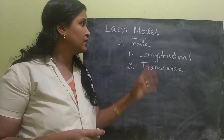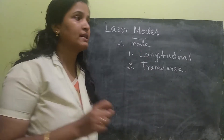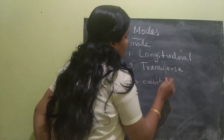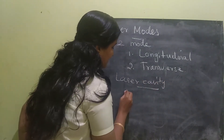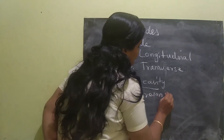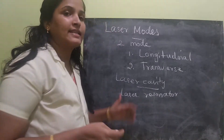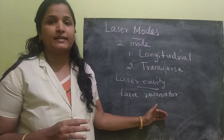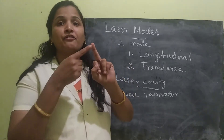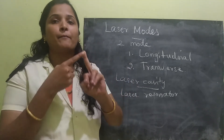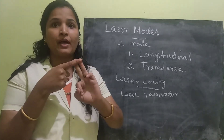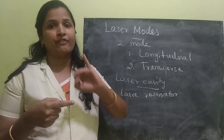Before going into the topic, first we should know what is laser cavity. Laser cavity — the other name of laser cavity is laser resonator. So laser cavity or laser resonator is a device that contains three elements: first is a pumping system, an active element or active medium, and next is reflectors.